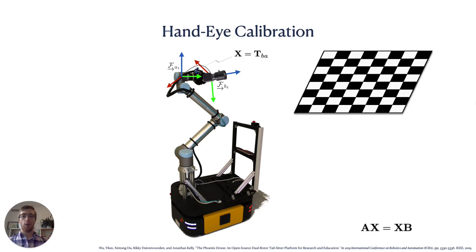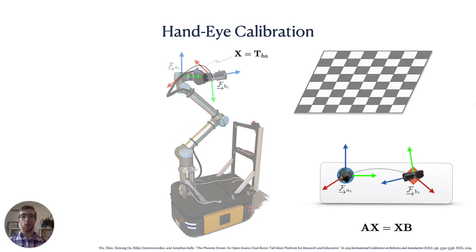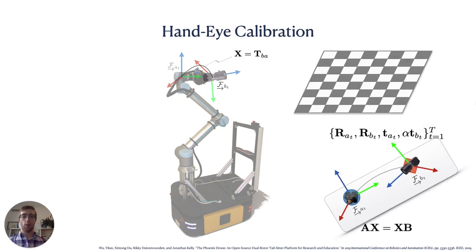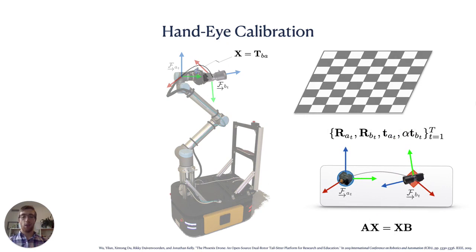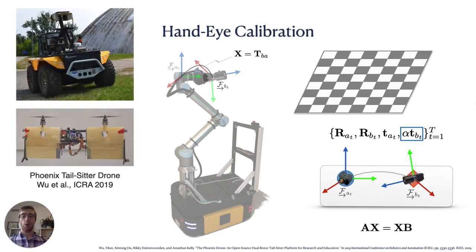The formulation of hand-eye calibration we'll be using is often called the AX equals XB problem because this simple kinematic equality holds for the relative motions A and B of two reference frames related by an extrinsic transformation X. In general, any sensor able to measure its own motion, often called ego motion, can be used in hand-eye calibration. Our solution even applies to the case where one of the sensors is a monocular camera unable to measure the metric scale of its ego motion in an unmapped environment. This approach is therefore not limited to the so-called hand-eye robot configurations and can be applied to a variety of sensor platforms.